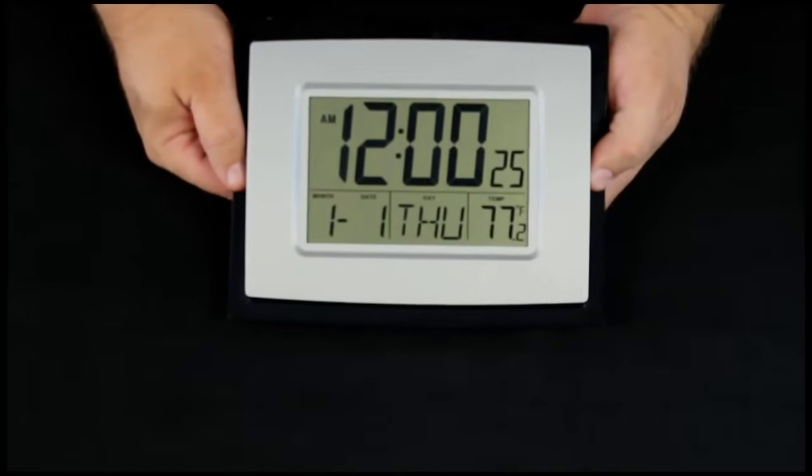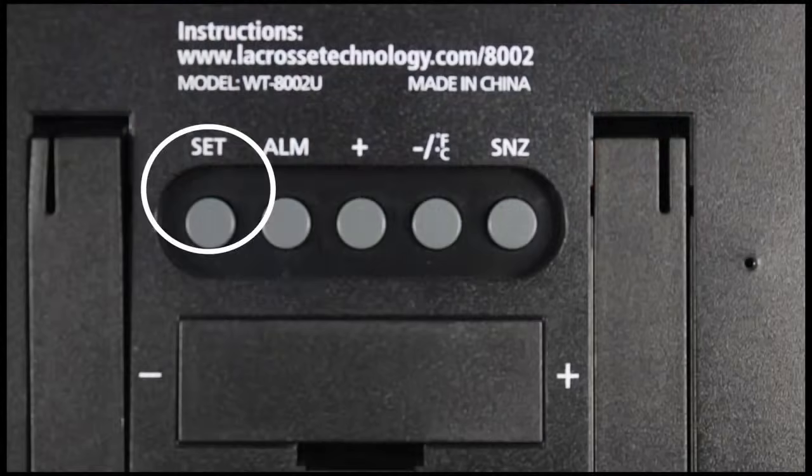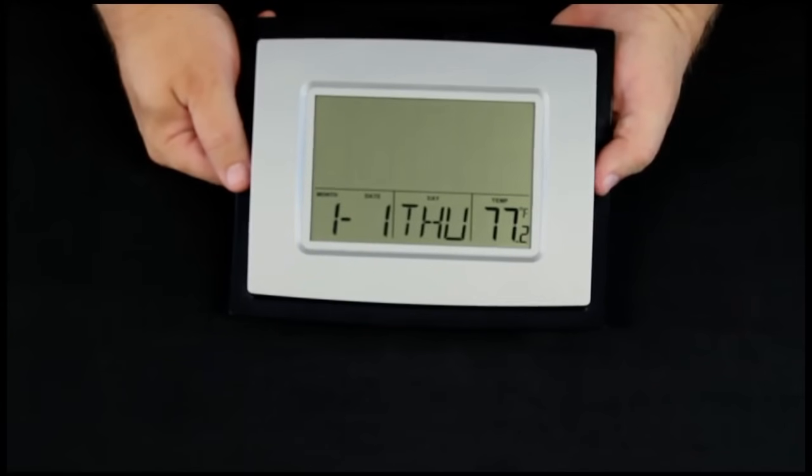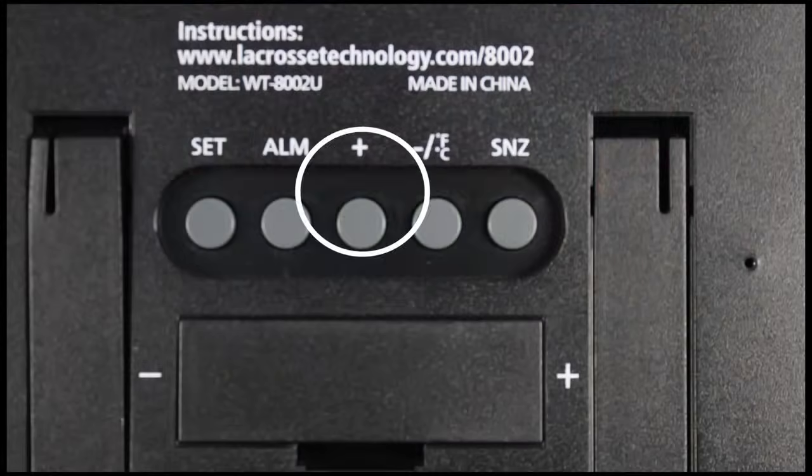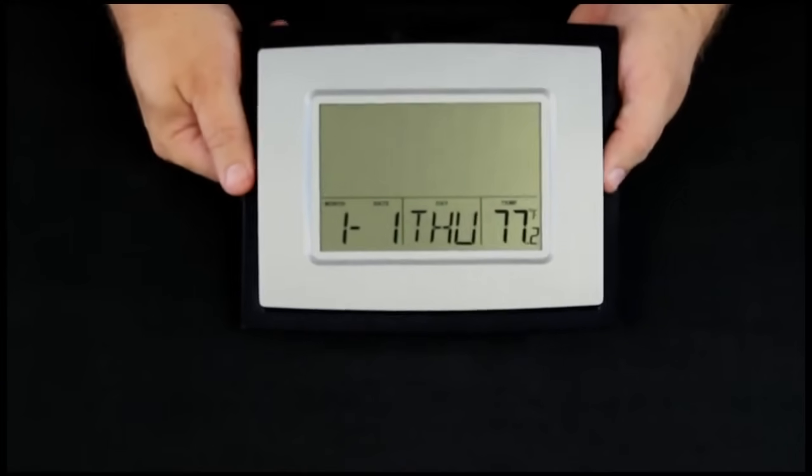We're going to press and hold the set button and the 12 hour flashes. We could use the plus button to set it for 24 hour military time. We'll put that plus button again and go back to standard 12 hour.